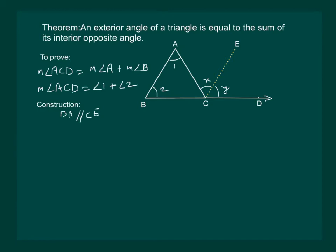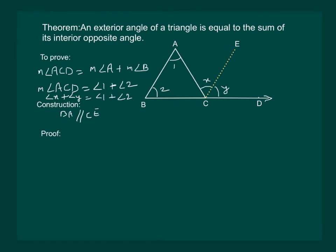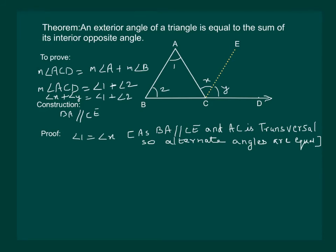Then we have to prove that angle X plus angle Y is equal to angle 1 plus angle 2, since angle ACD equals angle X plus angle Y. Since BA and CE are parallel, AC is a transversal, and alternate angles are equal, so angle 1 equals angle X. Similarly, since BA and CE are parallel, BD is a transversal, and angle 2 equals angle Y as they are corresponding angles.